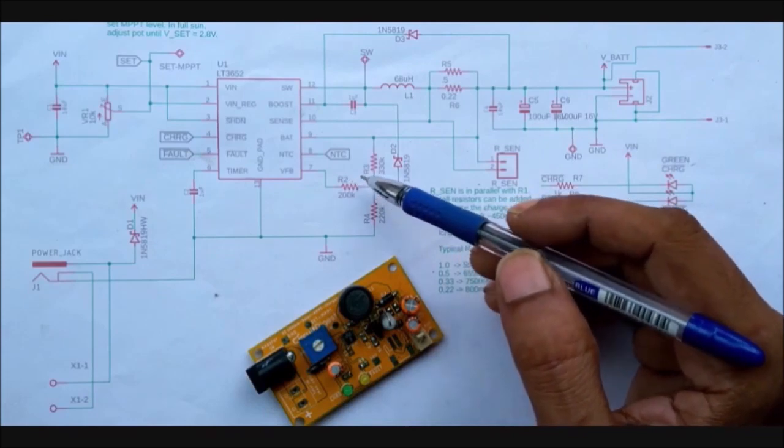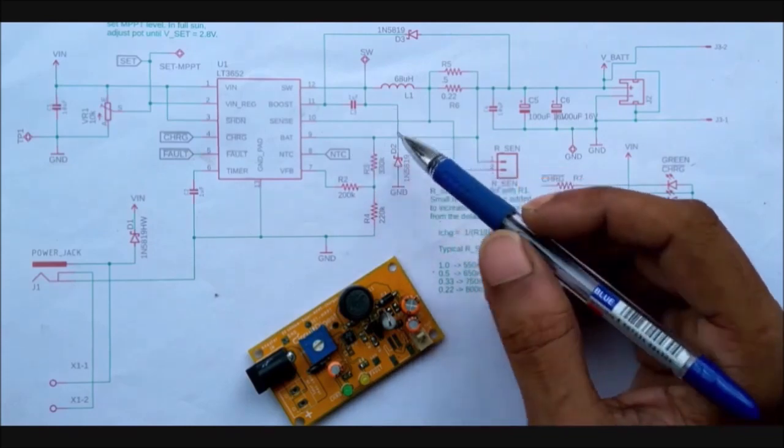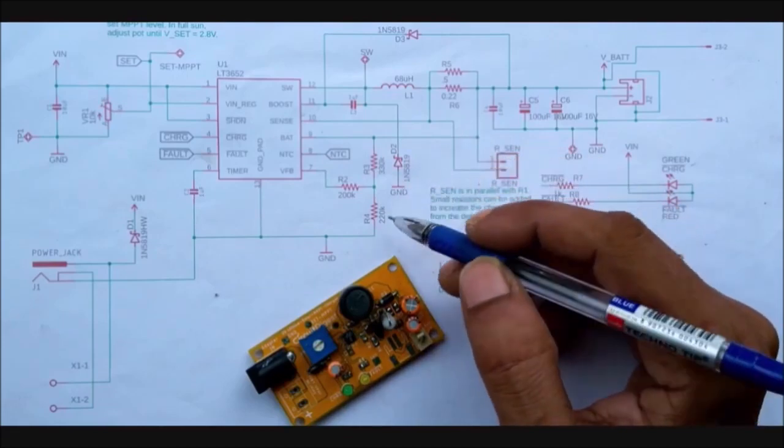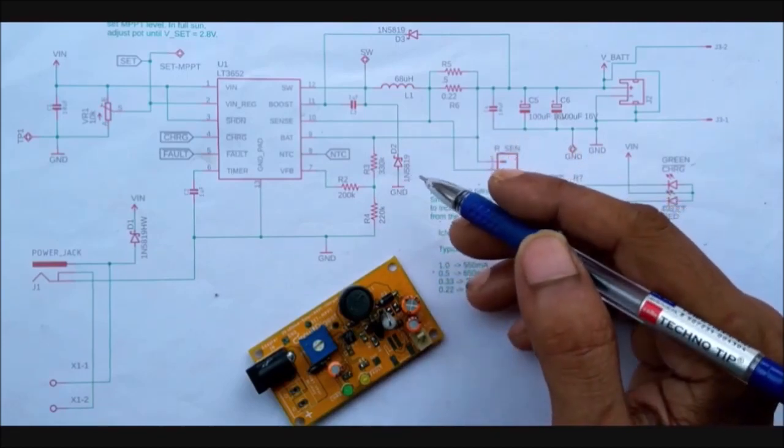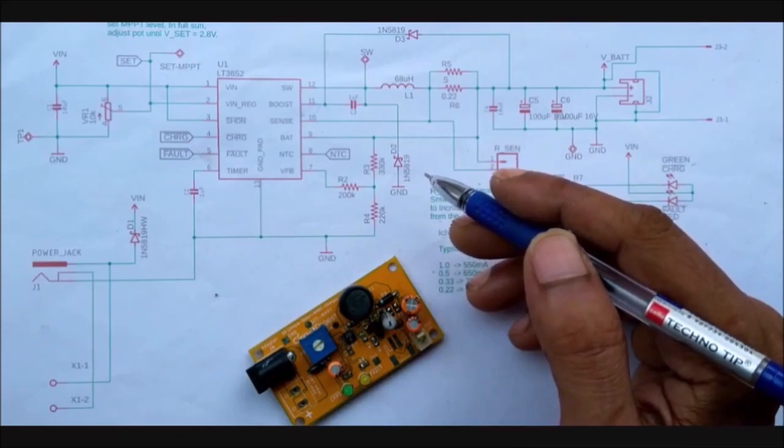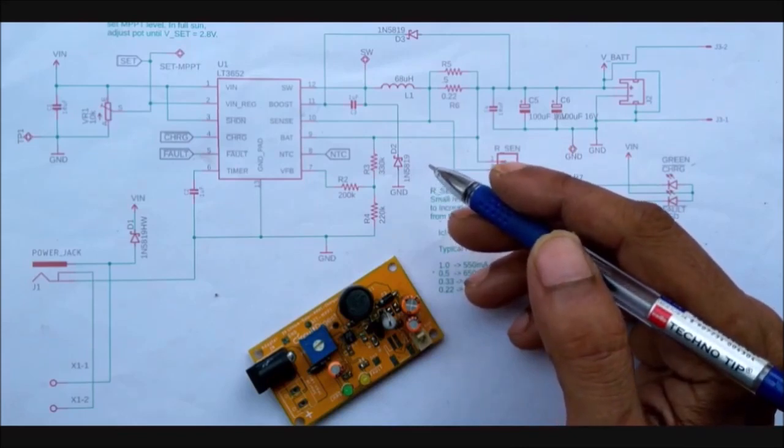You can make this circuit to work for different types of battery packs like 1s, 2s or 3s configuration. Here we have used it for 2s battery but the formula and explanation on how to change the value of these resistors can be found at the link given in the description of this video.